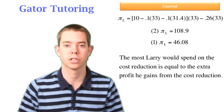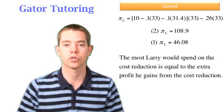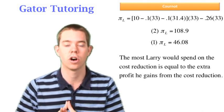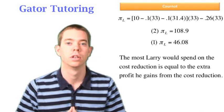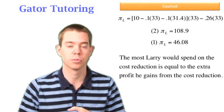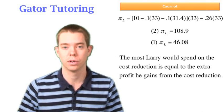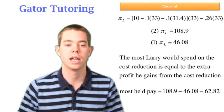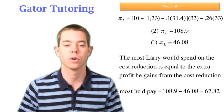Well, the most Larry would be willing to spend again is that extra cash he got from the gains of the cost reduction. So the extra profit he gained from reducing his cost, well that's the most he'd be willing to spend. Again, that's 108.9 minus 46.08, or in this case, $62.82.